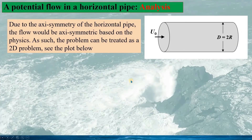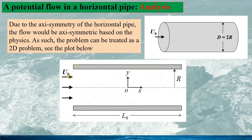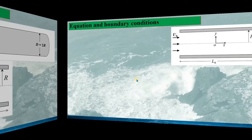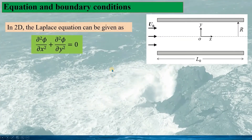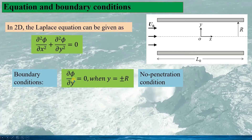For such a flow problem, due to the symmetry of the horizontal pipe, the flow would be symmetric based on physical analysis and experience. As such, the problem can be treated as a 2D problem. In 2D, the Laplace equation is given as this, where phi is the velocity potential function, and the boundary condition is given at y equal to plus and minus R.